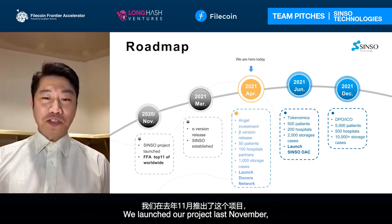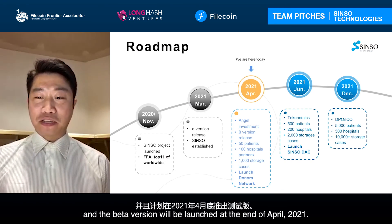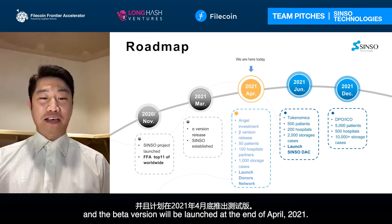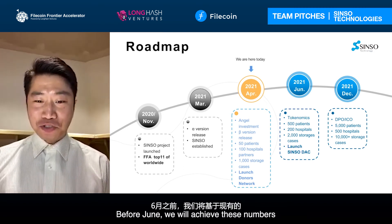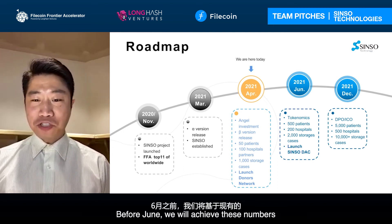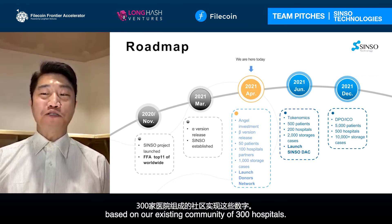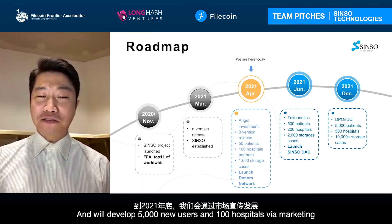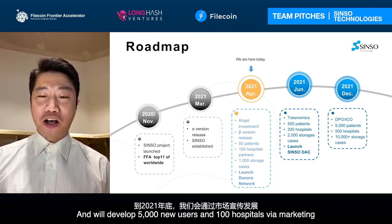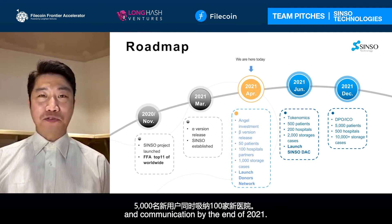We launched our project last November, and the beta version will launch at the end of April 2021. Before June, we will achieve key numbers through our existing community of 300 hospitals, and we plan to develop 5,000 new users and 100 new hospitals via marketing and outreach by the end of 2021.